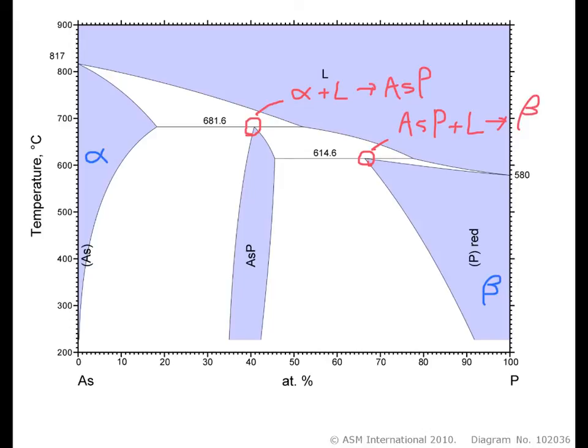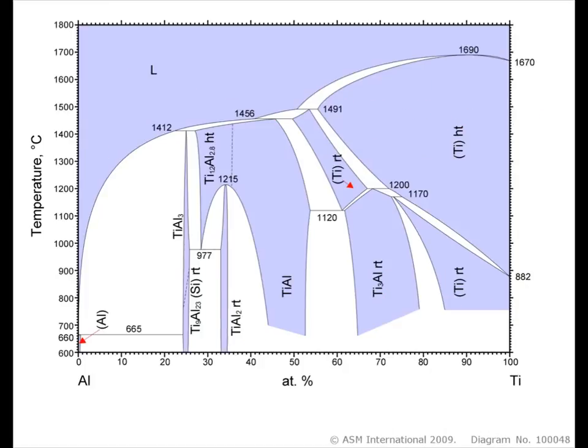So, it's possible to have multiple peritectic reactions occurring in one phase diagram. And let's look at an example of another phase diagram where there are even more. This is for the aluminum-titanium system. And you can see there are tons of single phase regions on here. This phase diagram comes from the ASM Alloy Phase Diagram Center, which we have access to here at Boise State. And one thing that's nice about their phase diagrams is that they color all of their single phase regions in purple, so you can see this.